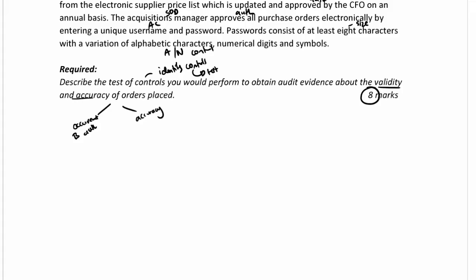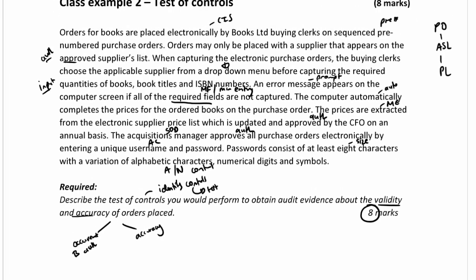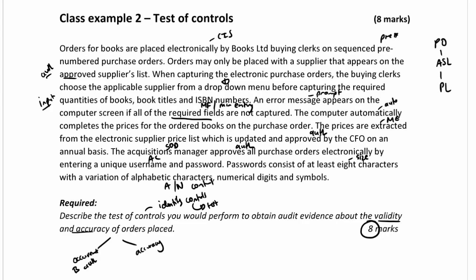If evenly spread, that would be four marks each for occurrence and accuracy. Looking at the controls identified, the first is pre-numbering. If we sequence test to identify missing numbers, that's for completeness. But if we sequence test to identify duplicates, we're testing for occurrence. So we perform sequence testing to identify duplicates — and we must state why, to show it addresses the occurrence assertion.